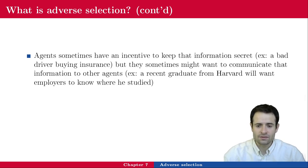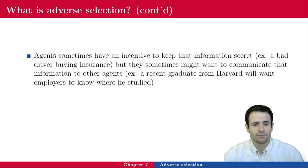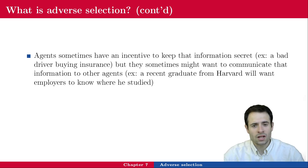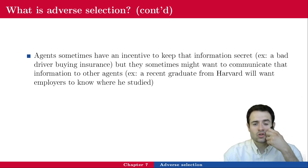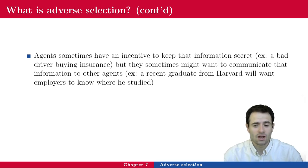Agents sometimes have an incentive to keep that information secret. Think about a bad driver who wants to get insurance — if he tells the insurance company he is a bad driver, the insurance company will charge him a higher premium. Think about somebody selling a bad quality product — he will never tell customers what he is selling is bad quality. Think about somebody who wants to borrow money from a bank but is going to spend some of it at the casino: he is not going to tell his banker, because the bank will charge a higher interest rate to cover the risk of default.